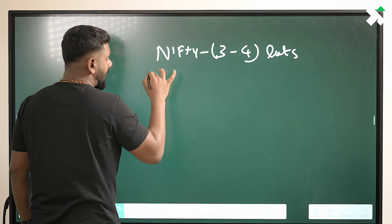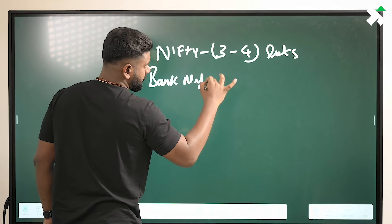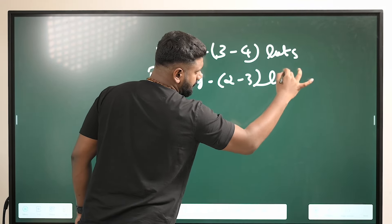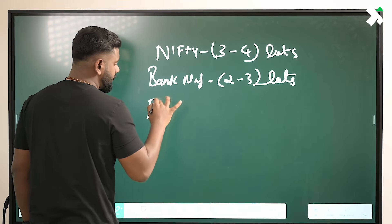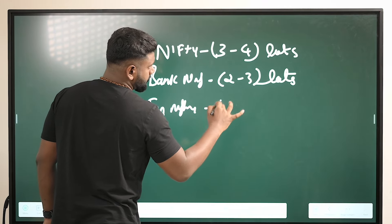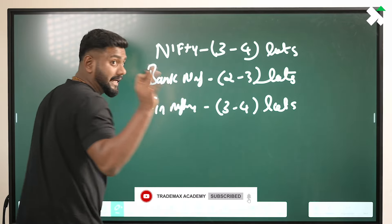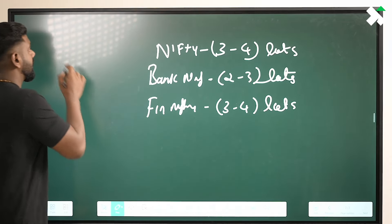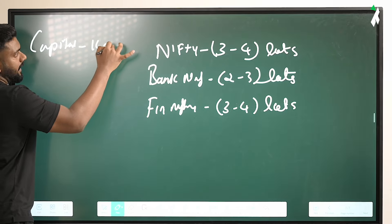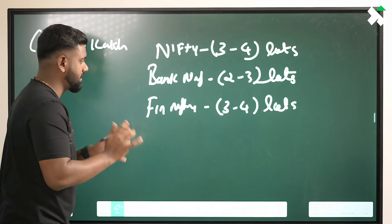Okay. Bank Nifty — let's say 2 to 3 lots. Fin Nifty 3 — let's say 3 to 4 lots. If we keep an average capital of 1 lakh, you can do it.